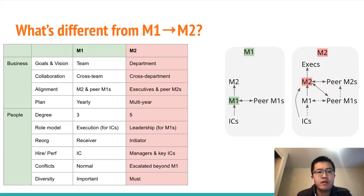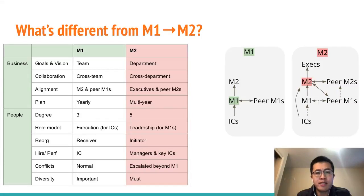First, let's compare the business side. An M1 needs to set the goal for the team, but an M2 needs to set a strategy for the organization. An M1 mainly does cross-team collaboration, but an M2 needs to collaborate across departments that involve more complex businesses.